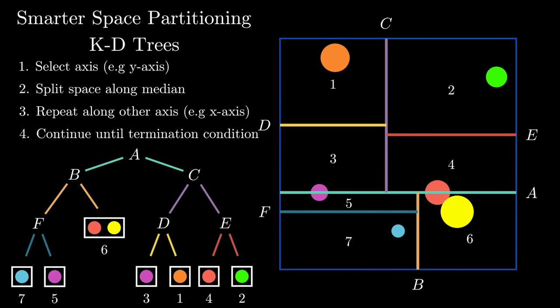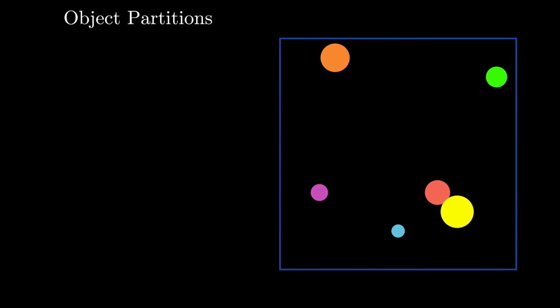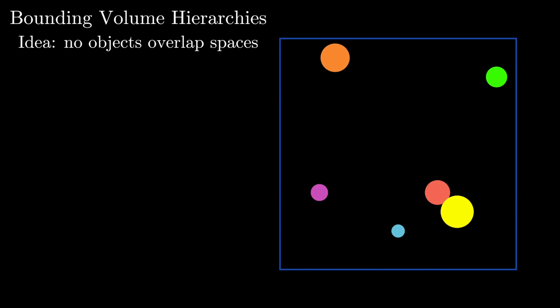The final scheme takes a slightly different approach. Sometimes it's really annoying to have objects in multiple spaces — especially if objects are complex geometries where performing collision checks is an expensive task. In this case, space partitioning schemes can actually be quite awful. So another idea is to use an object partitioning approach where we never allow objects to overlap spaces. The most common object partitioning method in computer graphics applications is bounding volume hierarchies, or BVHs. These data structures are so important in graphics that entire chapters of books are dedicated to them.